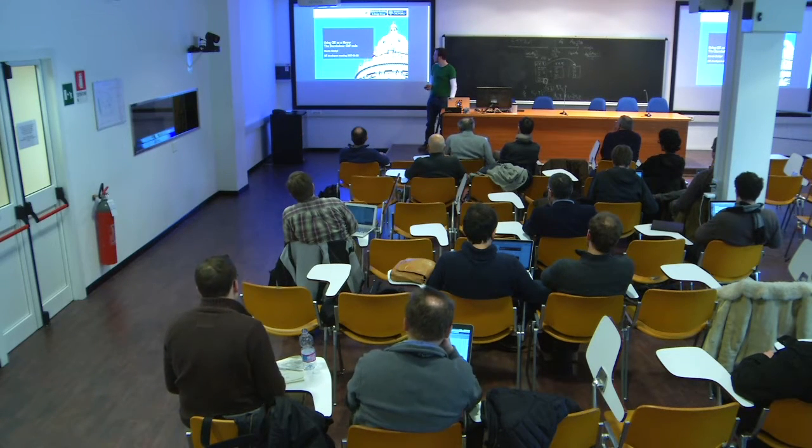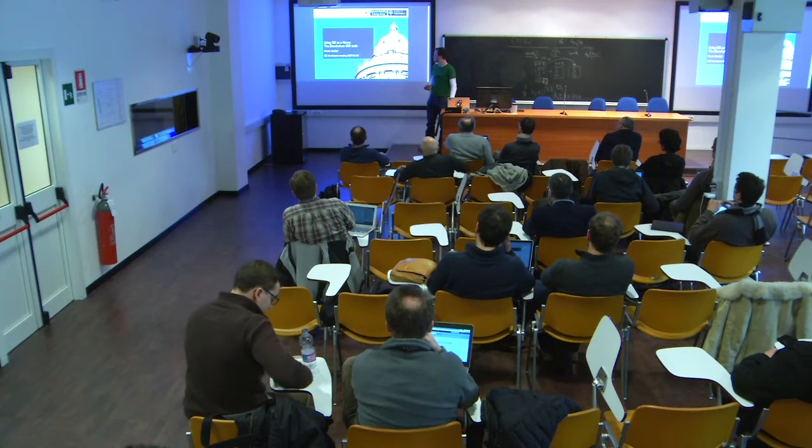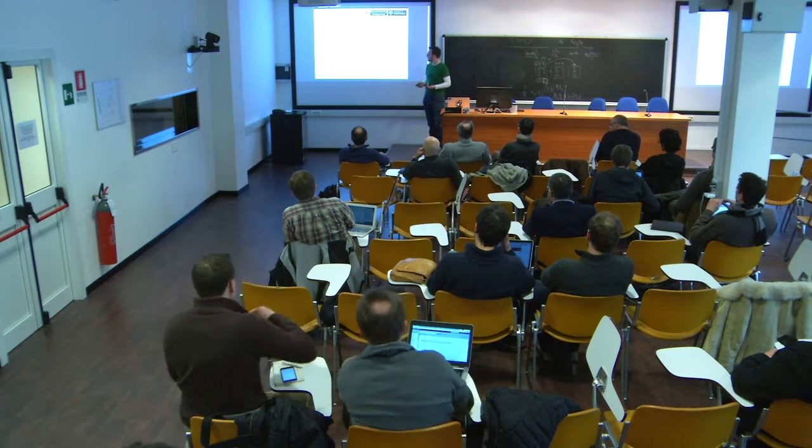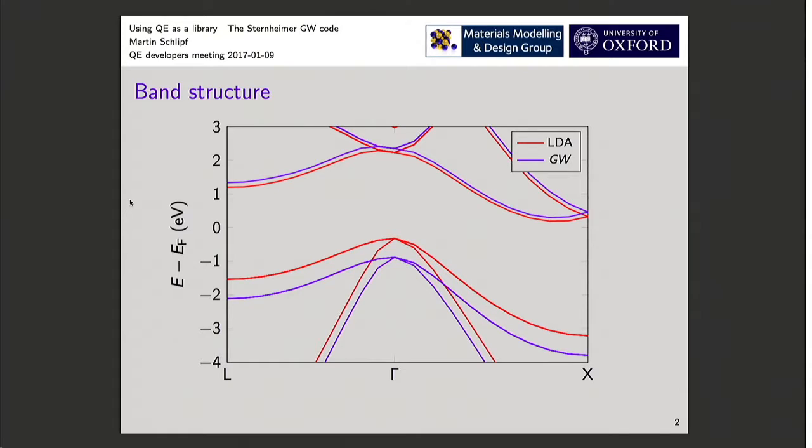For those who don't know, the niche we want to fill with our GW code is very accurate calculation of solids. In particular, we want to have the full band structure, so all of these K points present here are actually calculated by the code, it's not an interpolation scheme. We can determine effective masses directly with finite difference methods, it's not a fit, so it's really the effective mass.